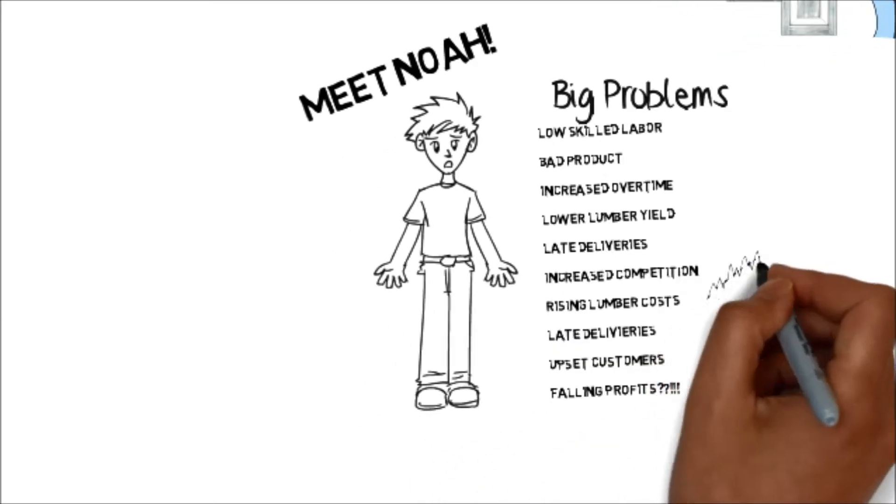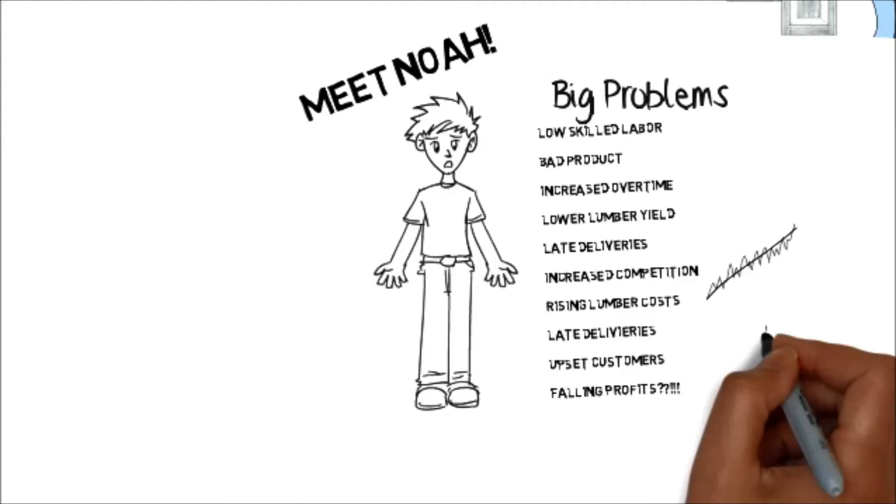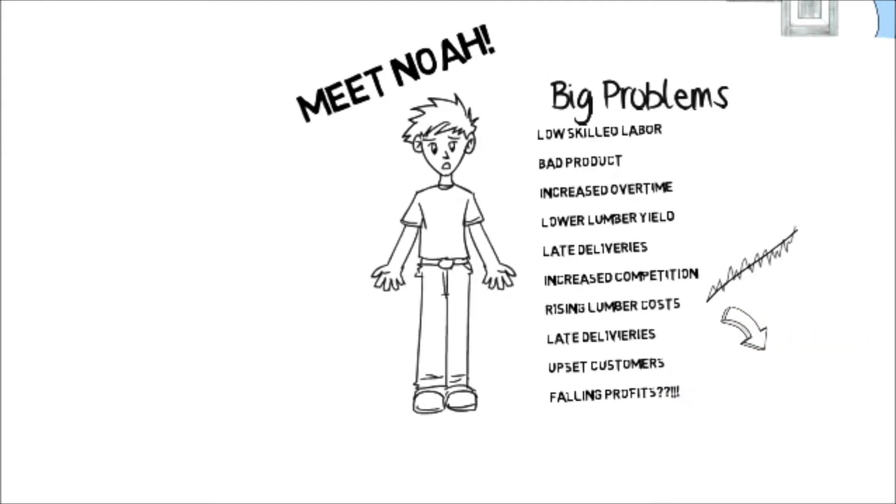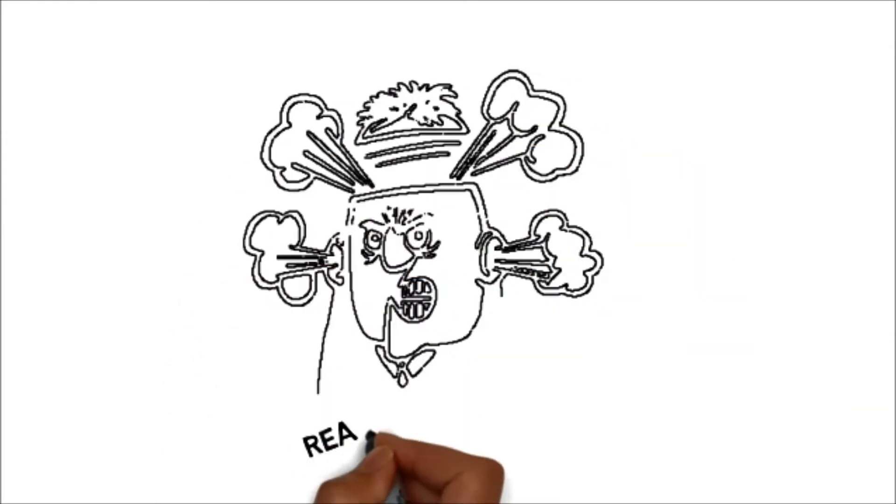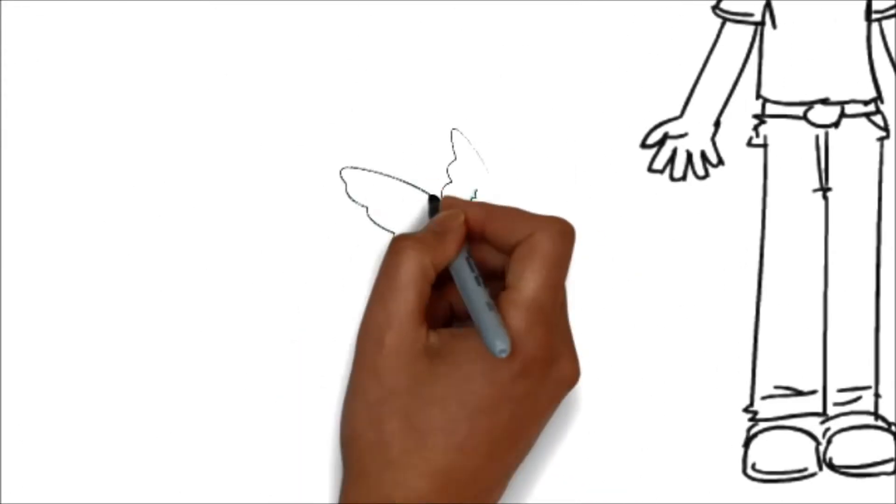To make matters worse, his lumber costs seem to be going up and up, while his yield seems to be going down and down. All this is adding up to late deliveries and upset customers. Noah has a lot of problems that are costing him a lot of money.